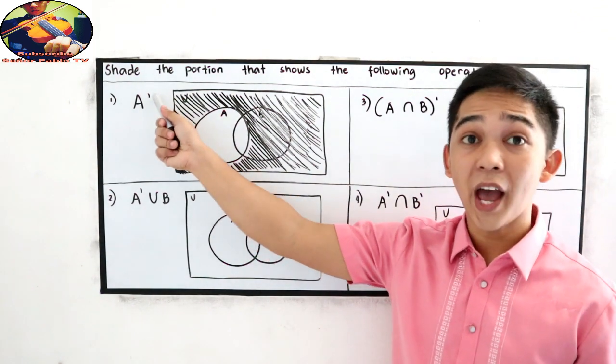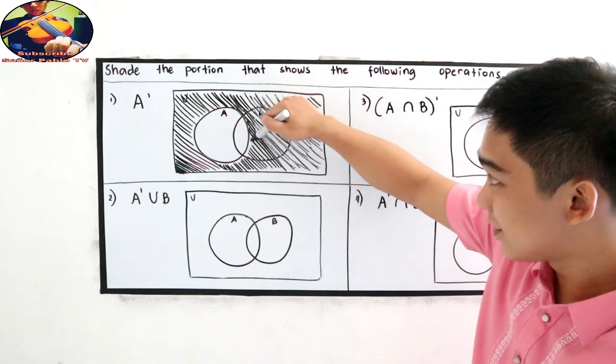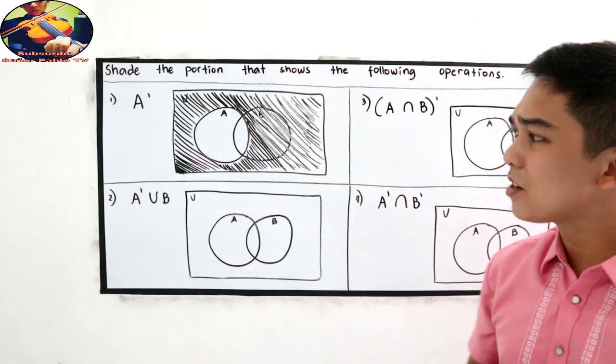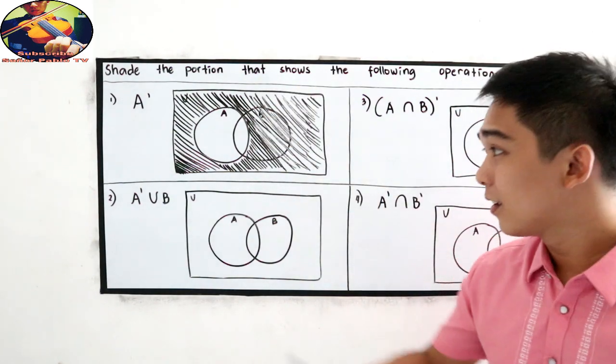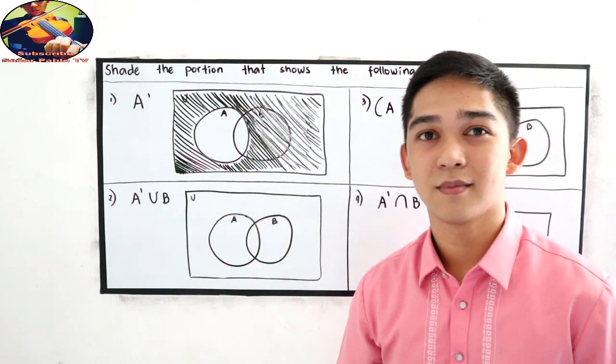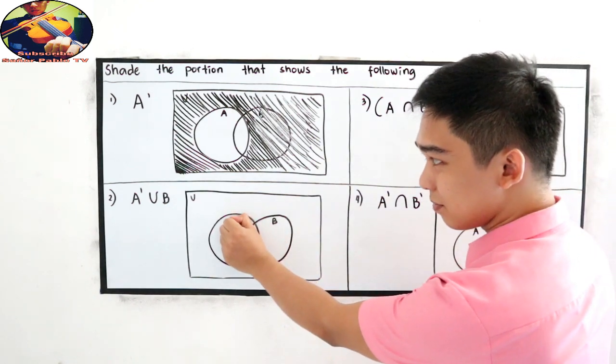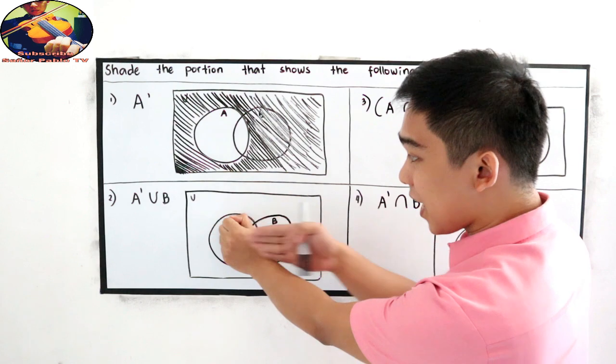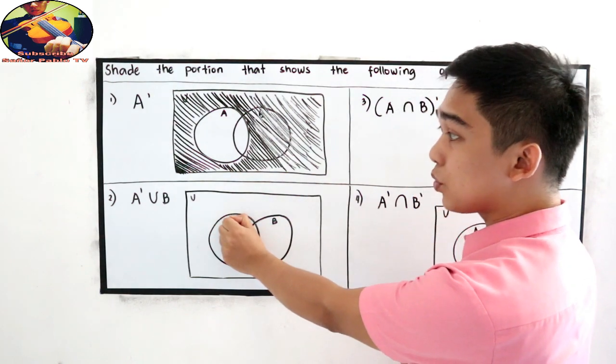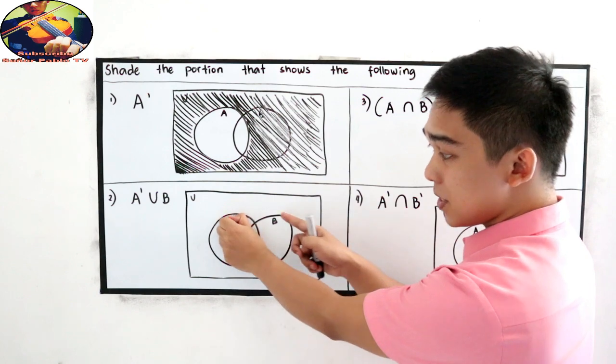So, A prime or A complement. Next, number two. A prime, A prime union B. So where is A prime? Outside A. Outside A. Then we're going to combine the portion in B.